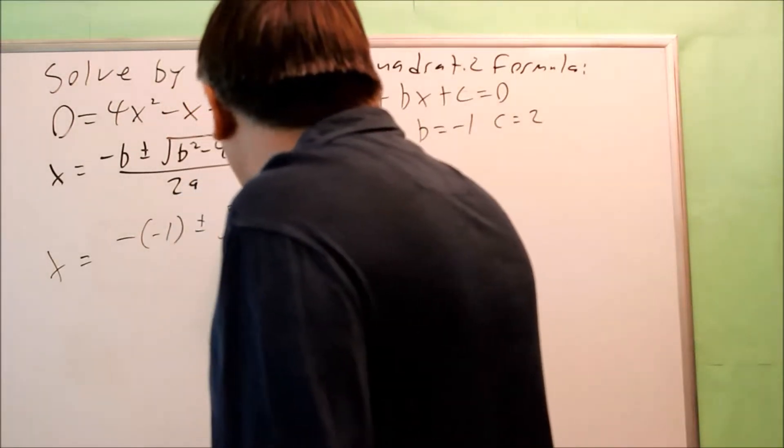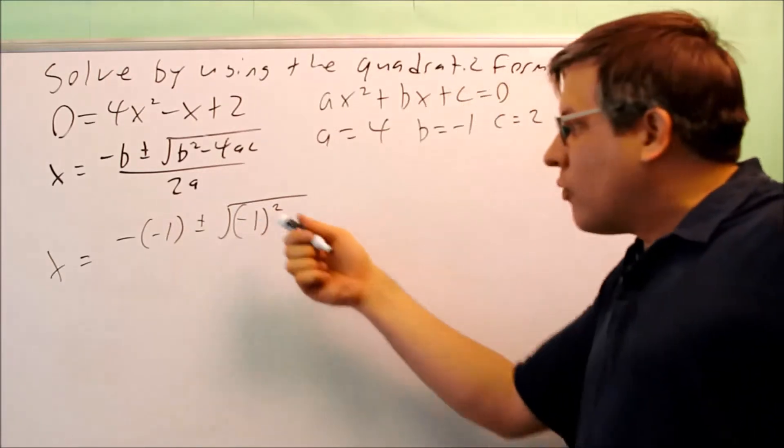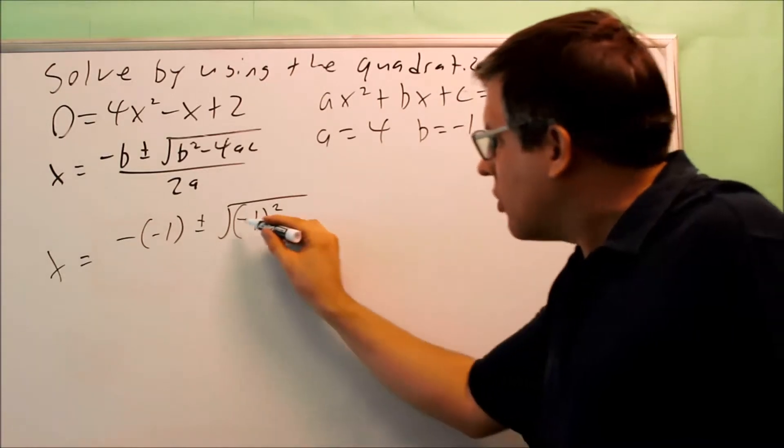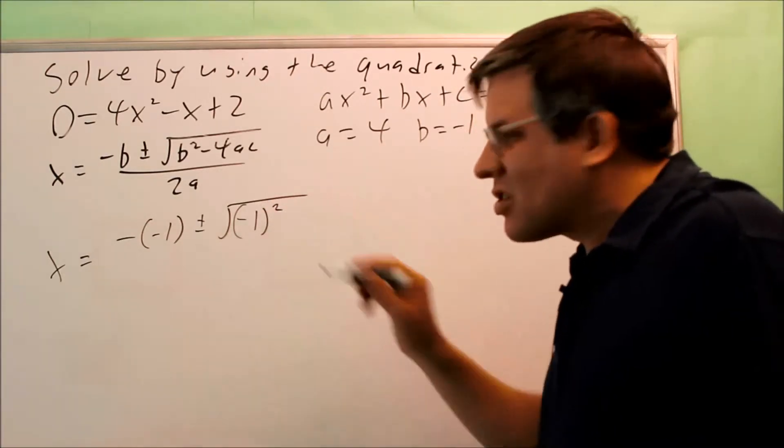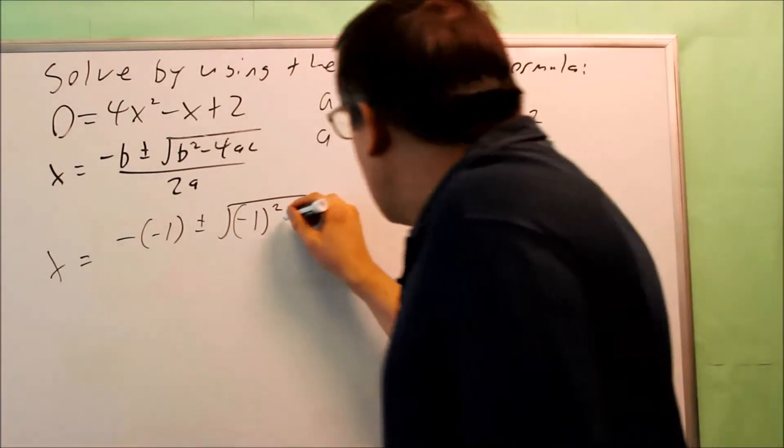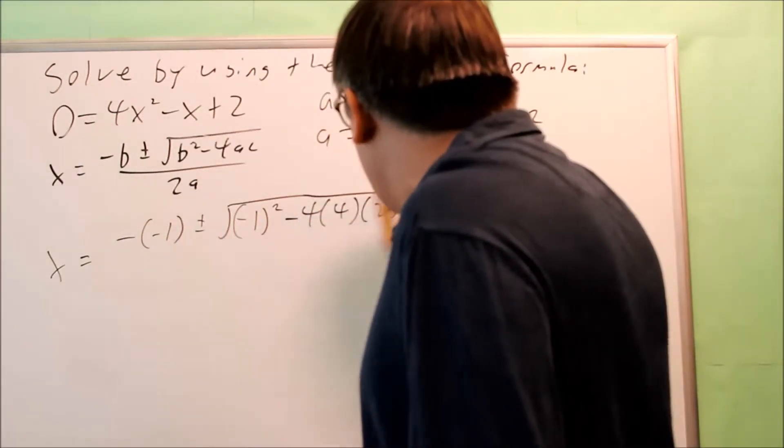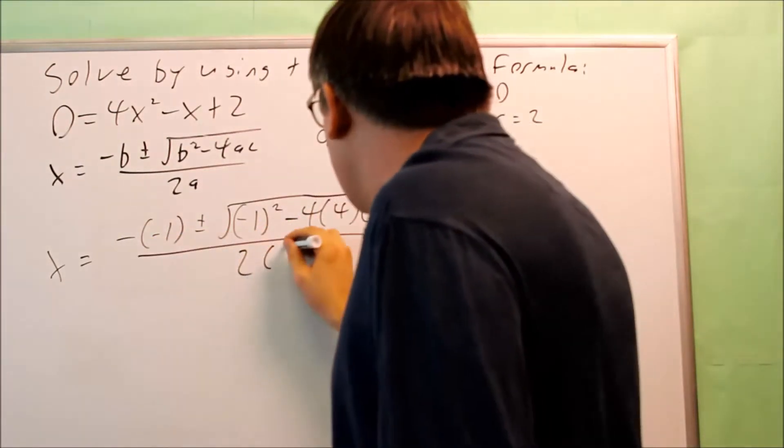Plus or minus the square root of b squared. Now, it's negative 1 quantity squared. That's going to give you a positive when you square it. So make sure that negative has to be inside the parentheses when you're squaring it. Minus 4 times A is 4, and C is 2. All this is over 2 times 4.